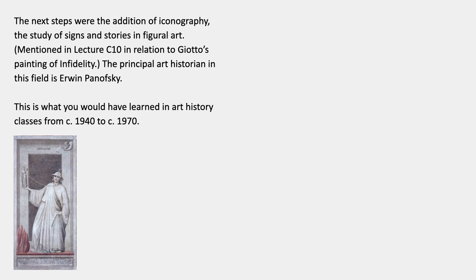The next steps in the growth of art theory were the addition of iconography, meaning the study of signs and stories in figural art. I mentioned that in lecture 10 in relation to Giotto's painting Infidelity, and the principal art historian in that field is Erwin Panofsky. This is what you would have learned in art history classes from maybe 1940 to about 1970. So now I'm building a tree of theories — after style analysis, connoisseurship, and formal analysis, there was Panofsky and iconography.